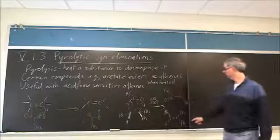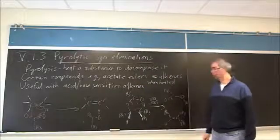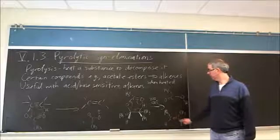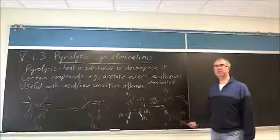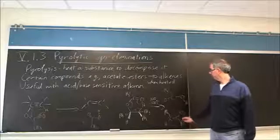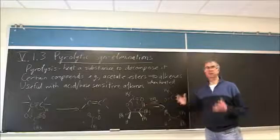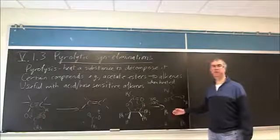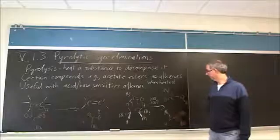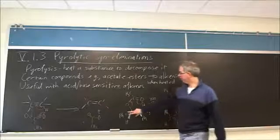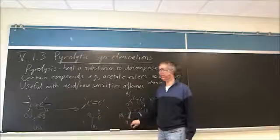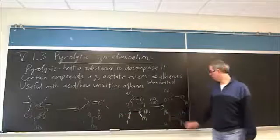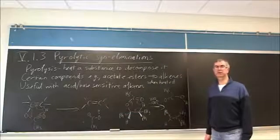Acetic acid is lost, and the other product is exclusively the Z-alkene because the syn transition state constrains it to just forming this one isomer. If you were to have the phenyl and the H flipped here, you'd get exclusively the E-isomer of the alkene.